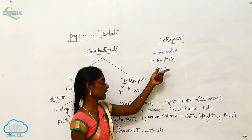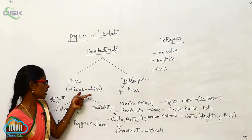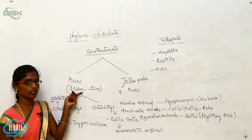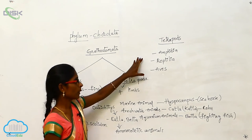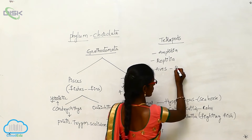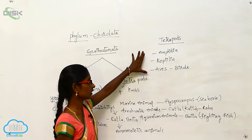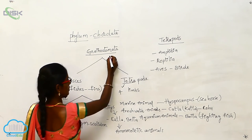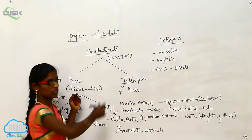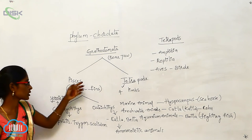Reptilia and Aves are called Sauropsida. The study of fishes is called Ichthyology. Aves is also called birds. Gnathostomata means bearing jaws — upper jaws and lower jaws.